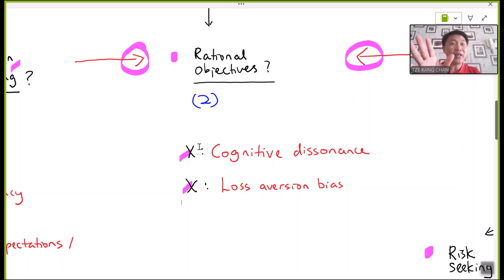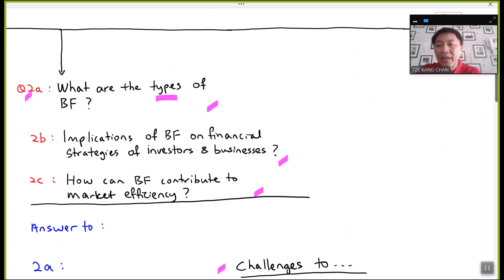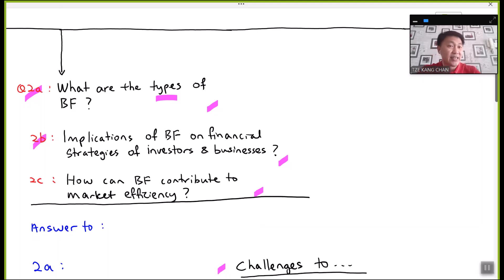Cognitive dissonance is equally common in financial decisions and strategies formulated by businesses that tend to be suboptimal, yet people just refuse to admit the mistake and insist on carrying on with such decisions and strategies. So how would these behavioral finance types affect the financial strategies of investors and businesses?